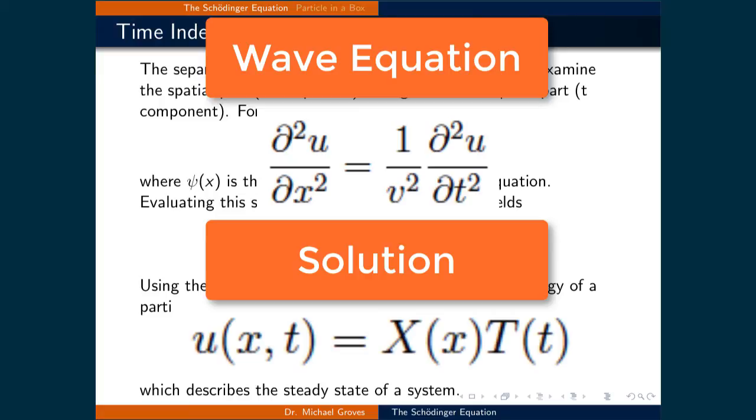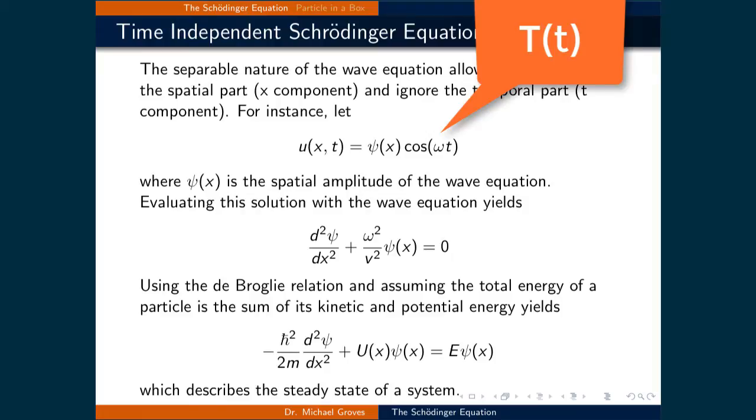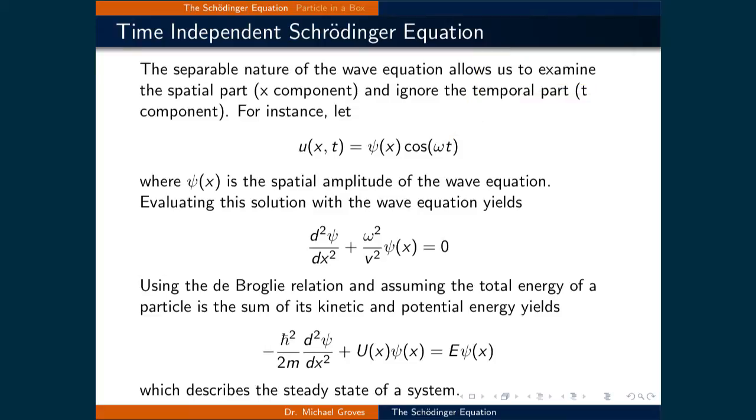The separable nature of the wave equation allows us to examine the spatial part, being the x part, and ignore the temporal part, being the t component. For instance, pretend that T(t) is equal to cosine omega t. Now this isn't a big stretch because we know that it will be a combination of sine and cosine functions, the solution to that part of the differential equation.